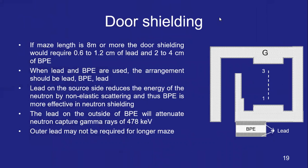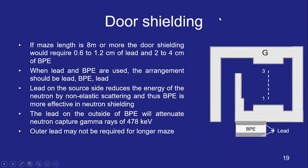If the maze length is 8 meters or more, door shielding requires 0.6 to 1.2 centimeters of lead and 2 to 4 centimeters of BPE. When lead and BPE are used, the arrangement must be: lead, then BPE, then lead. The lead on the source side reduces neutron energy by inelastic scattering, making the BPE more effective for neutron shielding by thermalizing them. The outer lead attenuates neutron capture gamma rays of about 478 keV. The outer lead may not be required if the maze is very long.